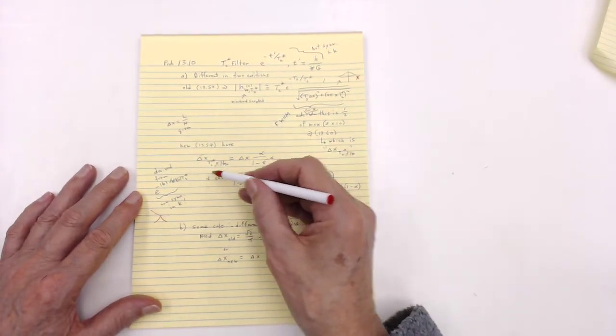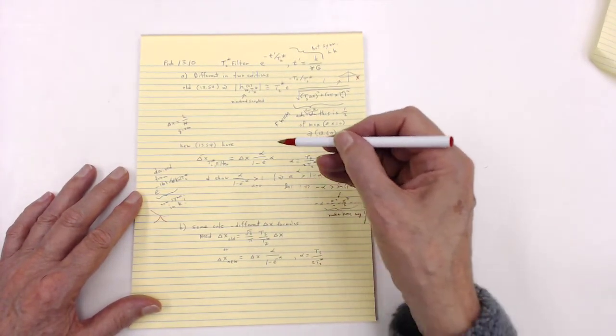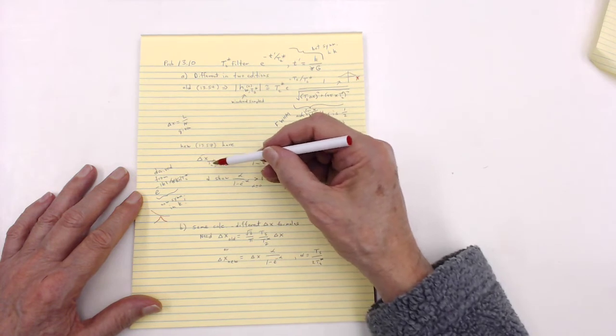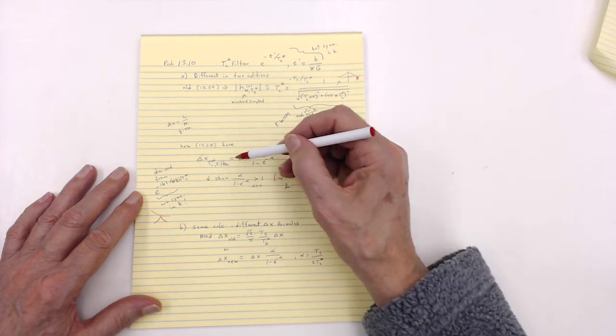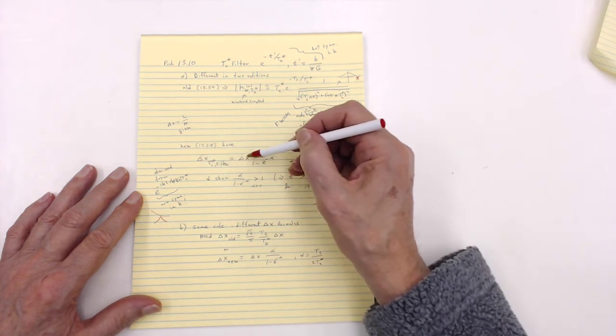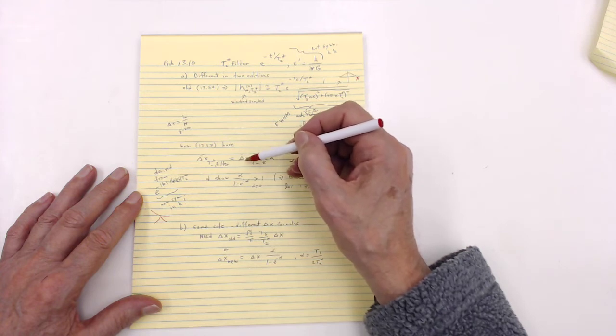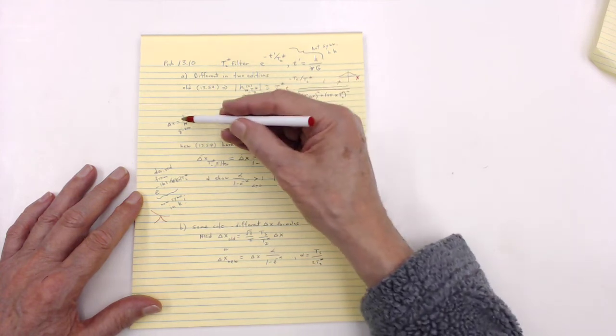All you have to do is take this answer and prove that delta x, the resolution, is bigger than our good old windowing and sampling delta x. Remember what that is. That's just L over M.